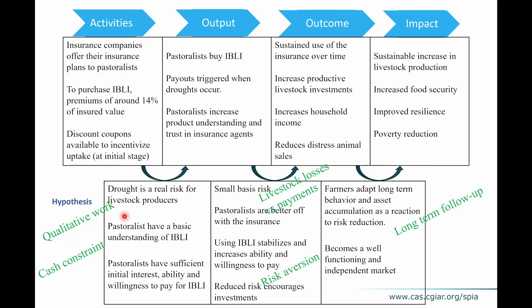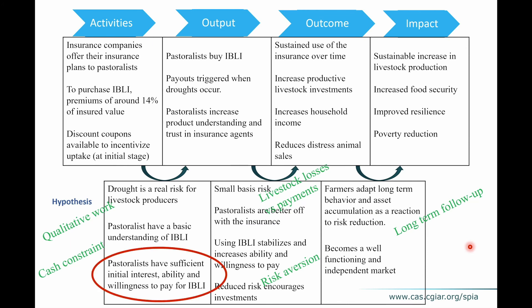For example, if drought needs to be a major risk for livestock producers for this project to work, you could use qualitative work to confirm this hypothesis. If cash constraints are important, you'd want to measure that. For basis risk, you'd want to know the correlation between observed livestock losses and insurance payments — good correlation means low basis risk. You may also collect data on risk aversion to understand its role in adoption, and plan long-term follow-up since behavior change impacts are long-term. All this helps you design your study and identify where things went wrong along the way.